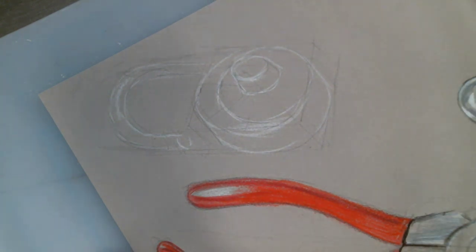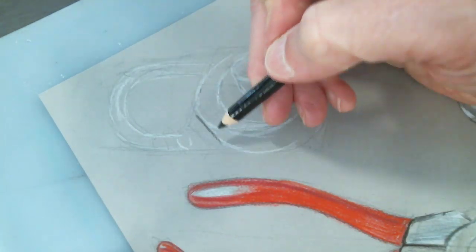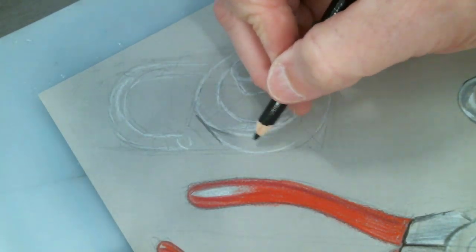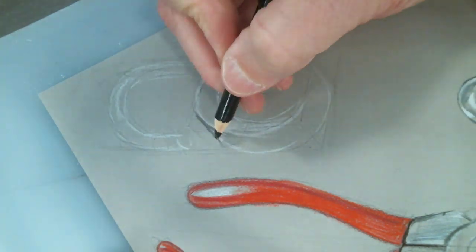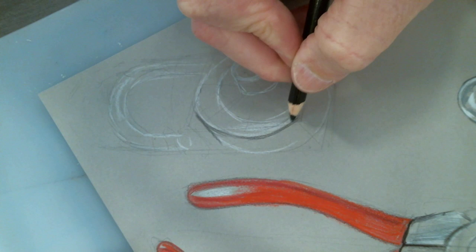And then take the black pencil and just start to draw these edges. Got some different coloring in there, so I'm just going to draw it out.